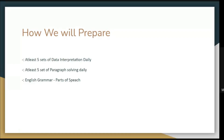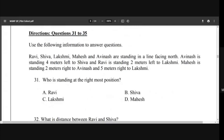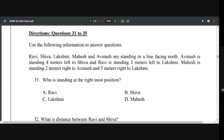Let's come to the point now. We have five questions for today — direction-based questions. These are very simple. You need to solve them one step at a time, following each step sequentially. I hope you are sitting with a copy and pen. Just make the line. Let's start the question: Ravi, Shiva, Laxmi, Mahesh, and Avinash — five people — are standing in a line facing north.